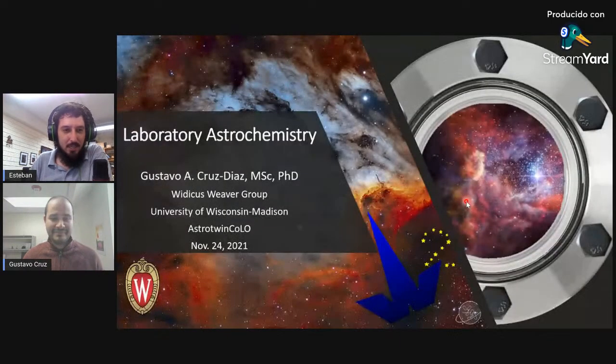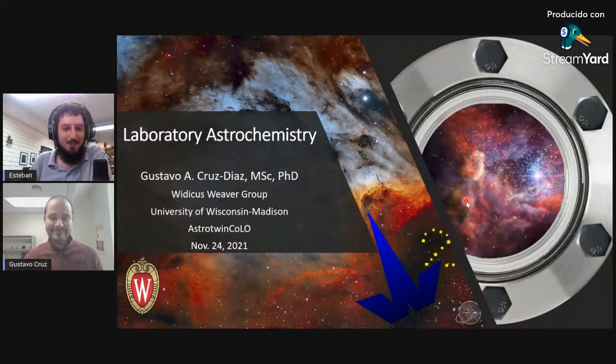They grow ice analogs by depositing gas in a substrate, then irradiate the ice mantles with UV photons to break the molecules, inducing chemistry and producing complex organic molecules in the process. They use a cryostat to reach cryogenic temperatures, and they perform quadruple mass spectrometry, infrared spectroscopy, and millimeter and submillimeter spectroscopy.